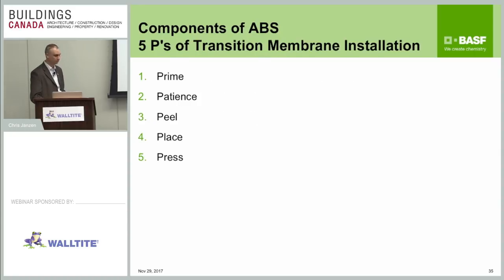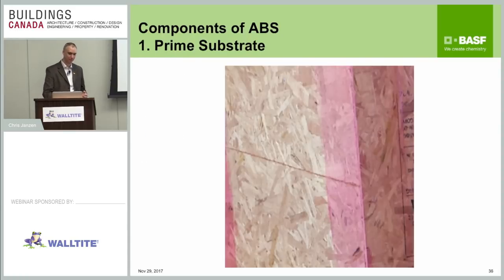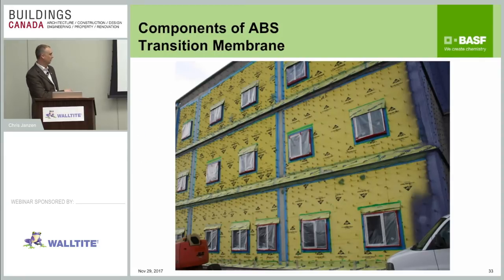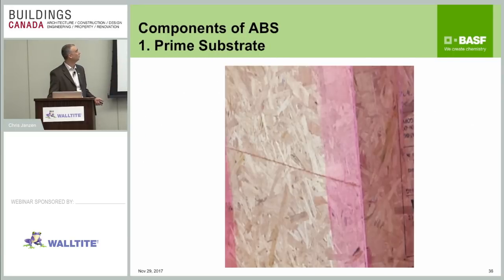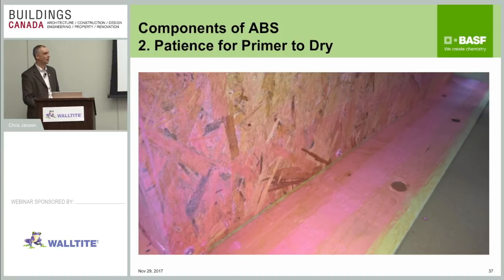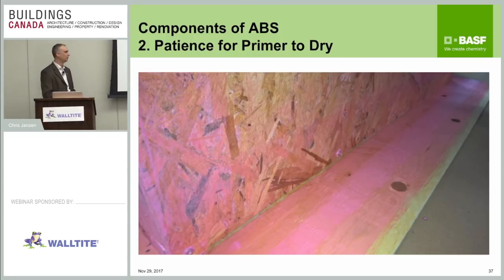There are five Ps of transition membranes — and typically applicators only do two of them: peel and place. The first P is prime the substrate. If you see green primer extended beyond all the transition membrane on a job site, that's a good sign they used primer everywhere. You need to prime the substrate — they can use a brush or roller — and then they need patience, because that primer needs to dry. Primer ties up any dust or construction debris on the substrate that can affect adhesion of the transition membrane. It acts like a little binder or glue. Here, the dull pink finish is dry primer versus the glossy area which is still wet — installers should touch it with their gloves to confirm it's tacky but not picking up on the glove. Primers also need to be reapplied every day — if left exposed overnight, they need to be re-primed before more membrane goes down.